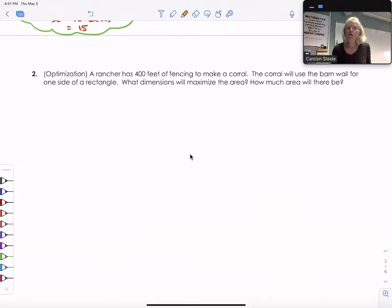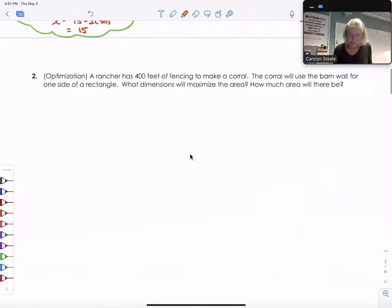All right, a rancher. So somebody who maybe has cattle or horses has 400 feet of fencing and they're going to make a corral. A corral is just like a pen where they're going to keep their animals. The corral will use the barn wall, just like the playground wall, for one side of the rectangle. So it's going to be a rectangle.